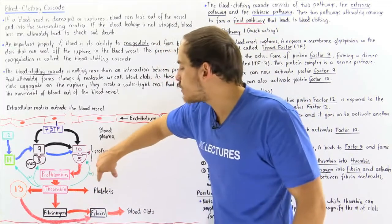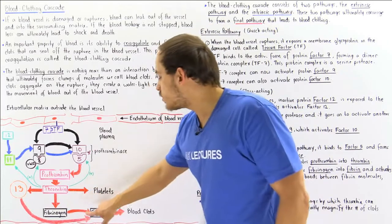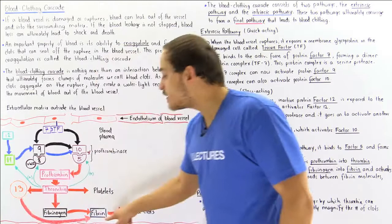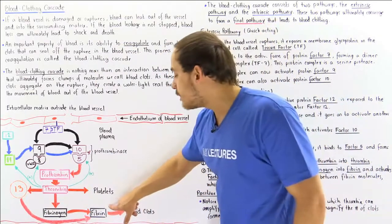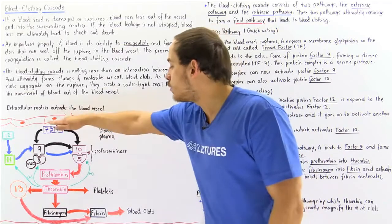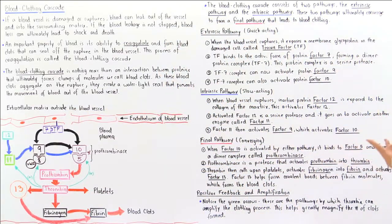So basically the fibrin with the help of this protein factor 13, which is also activated by thrombin, the fibrin can form these covalent bonds between other adjacent fibrin proteins. And so we eventually form these blood clots. So thrombin not only activates platelets and calls upon platelets, it also forms fibrin and it activates factor 13.